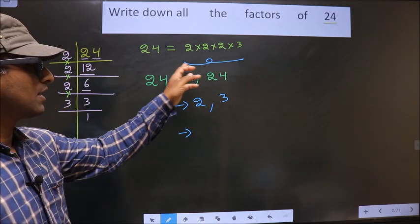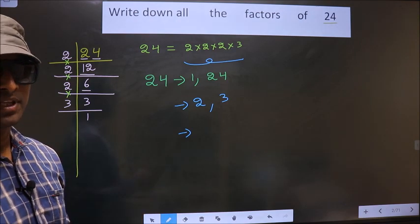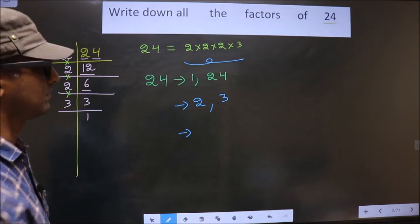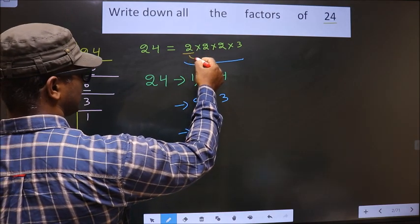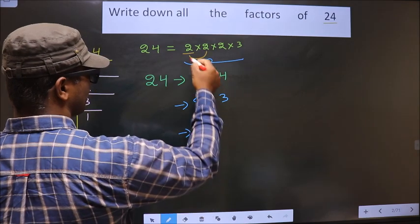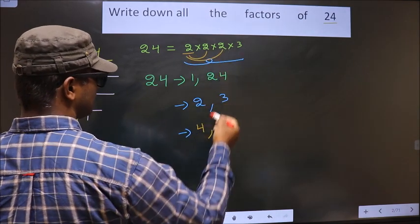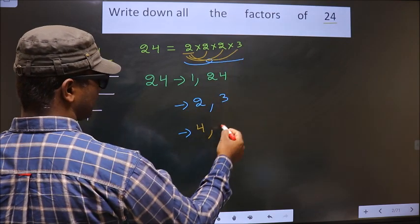Now from these numbers, you select 2 numbers at a time. How do we select it? See, first I fix this 2. This I combine with this 2 will give me 4. Now this 2 I combine with this 2 will give me 4. This 2 I combine with 3, I get 6.